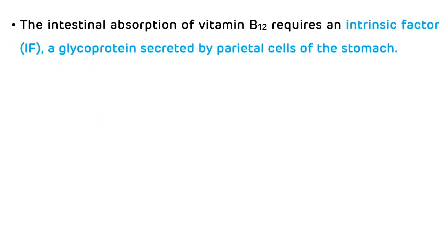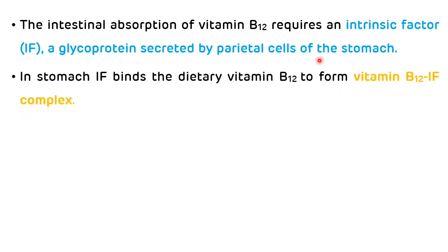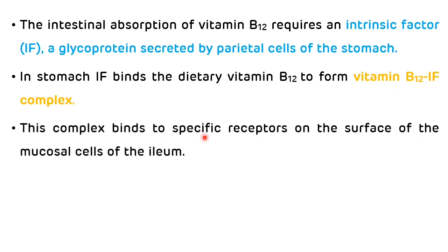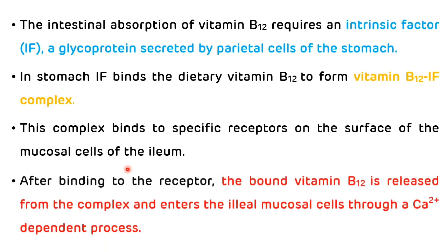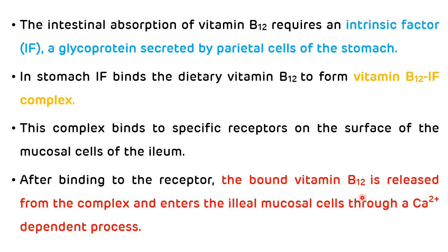Now absorption, transport, and storage of vitamin B12. The intestinal absorption of vitamin B12 requires an intrinsic factor of Castle, which is a glycoprotein secreted by parietal cells of the stomach. In the stomach, intrinsic factor binds to the dietary vitamin B12 to form a vitamin B12–intrinsic factor complex. This complex binds to specific receptors on the surface of the mucosal cells of the ileum, and the bound vitamin B12 is released from the complex and enters the ileal mucosal cells through a calcium-dependent process.